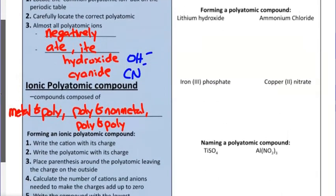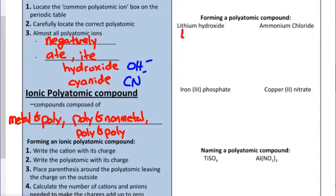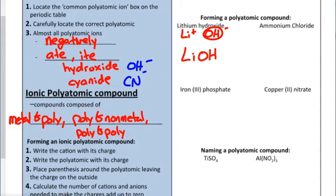For lithium hydroxide: lithium in group one has a plus one charge. Hydroxide is one oxygen and one hydrogen with a negative one charge — I draw circles around them just to indicate it's the entire group that is the hydroxide ion with a negative one charge. You don't have to draw circles for homework or the quiz. Since the charges add up to zero, we only need one lithium and one hydroxide ion.